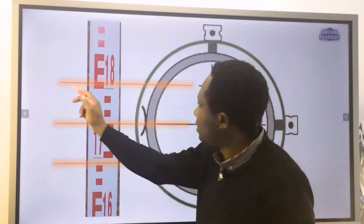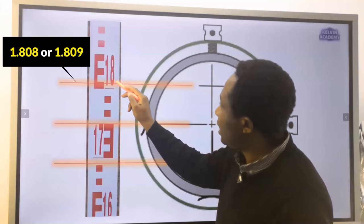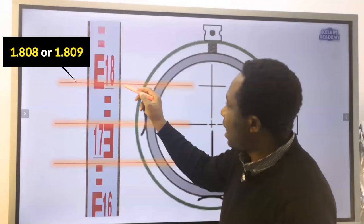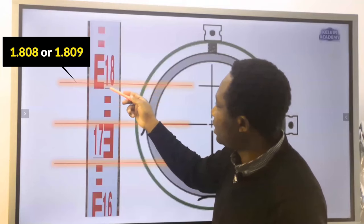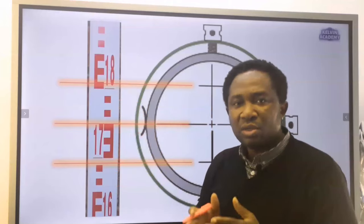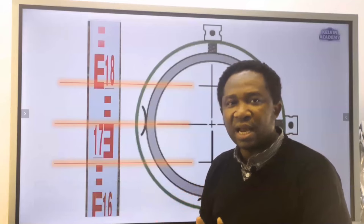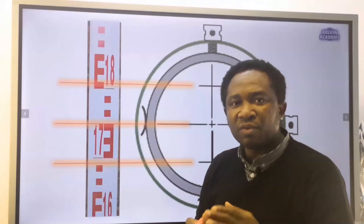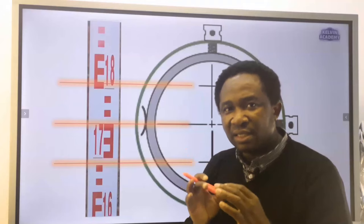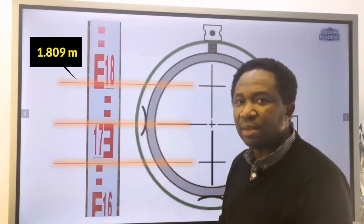If you observe this line, someone can read this as 1.808 and another can read it as 1.809. You can see why the tolerance of plus or minus 0.05 is allowed to take care of the little difference in this reading. For the cross hair, we are going to accept 1.809 meters.